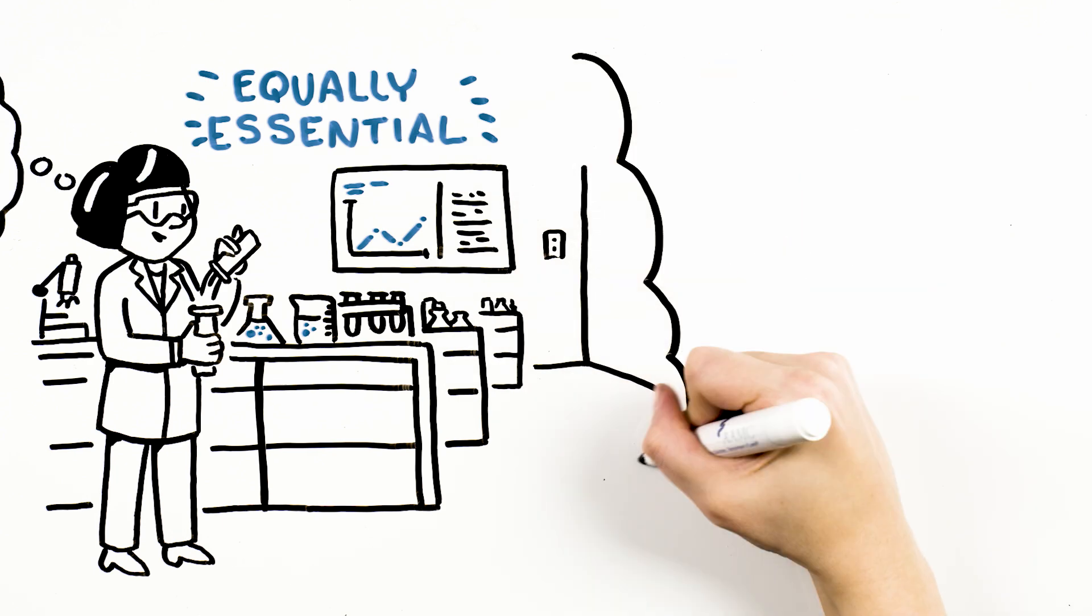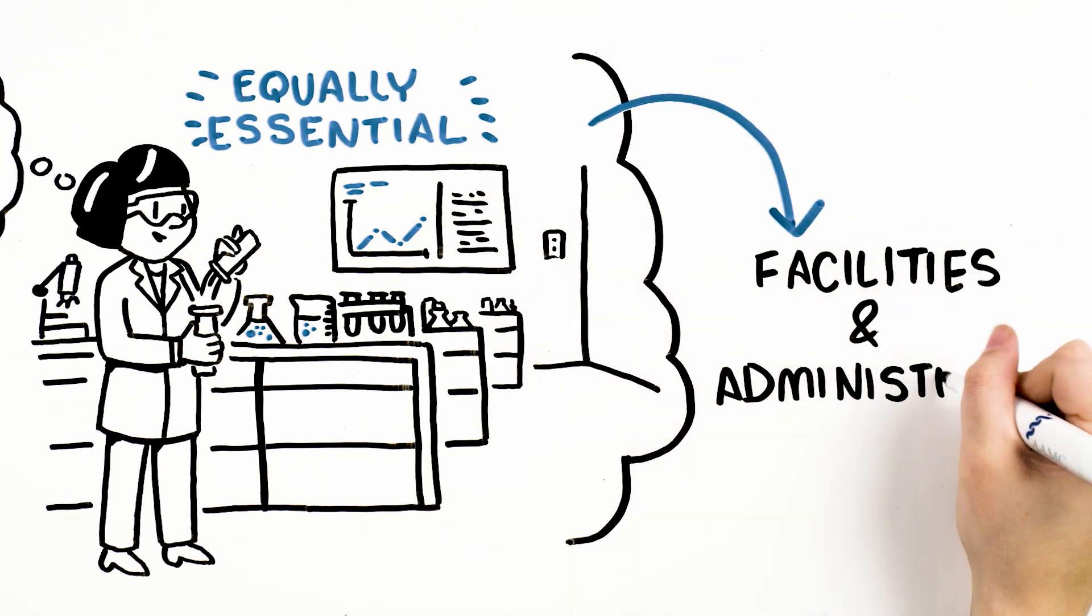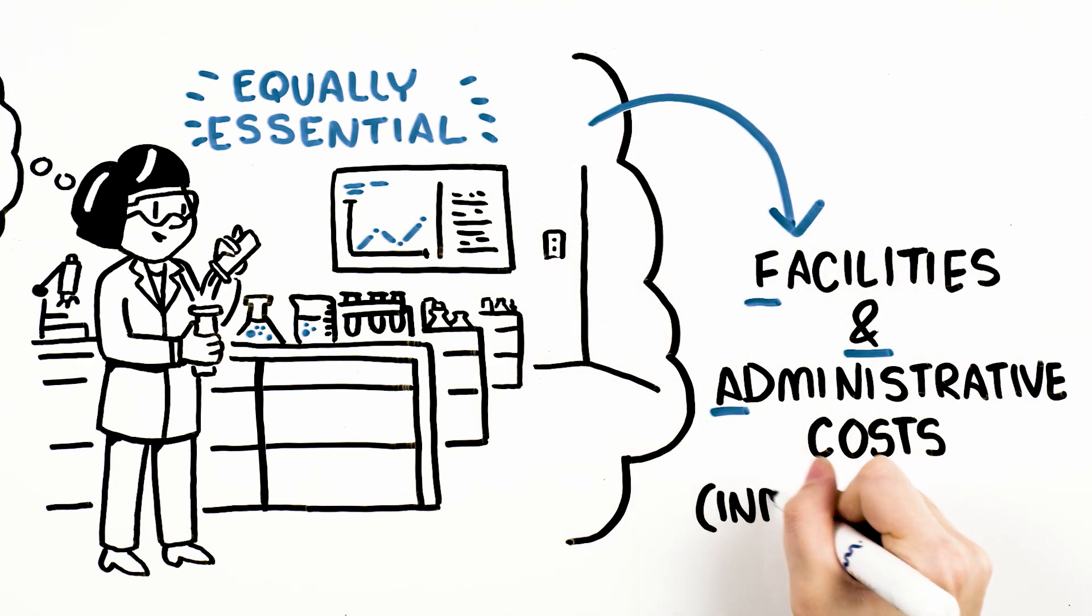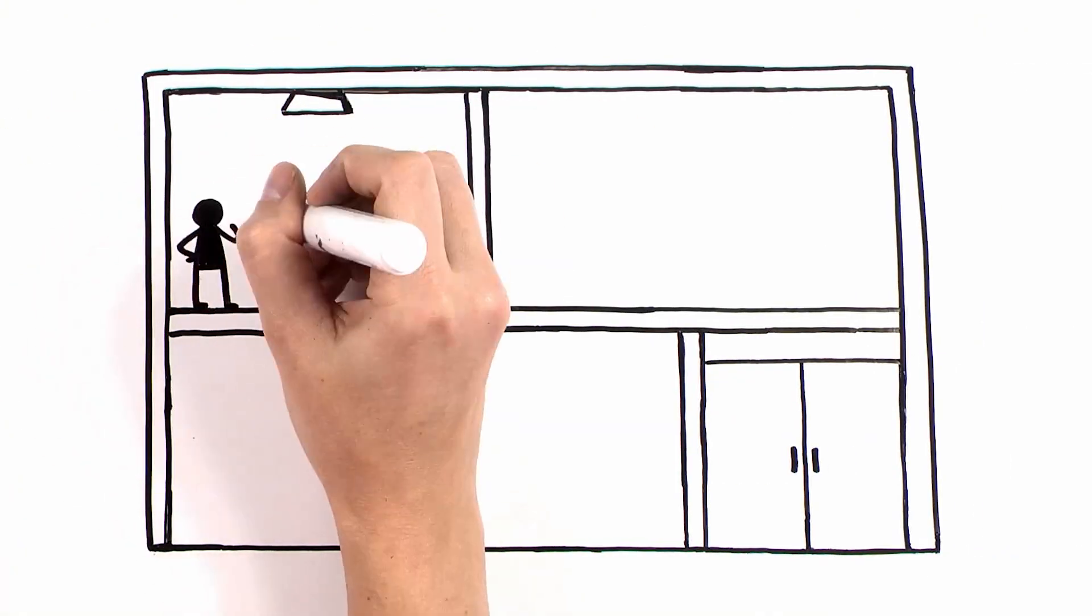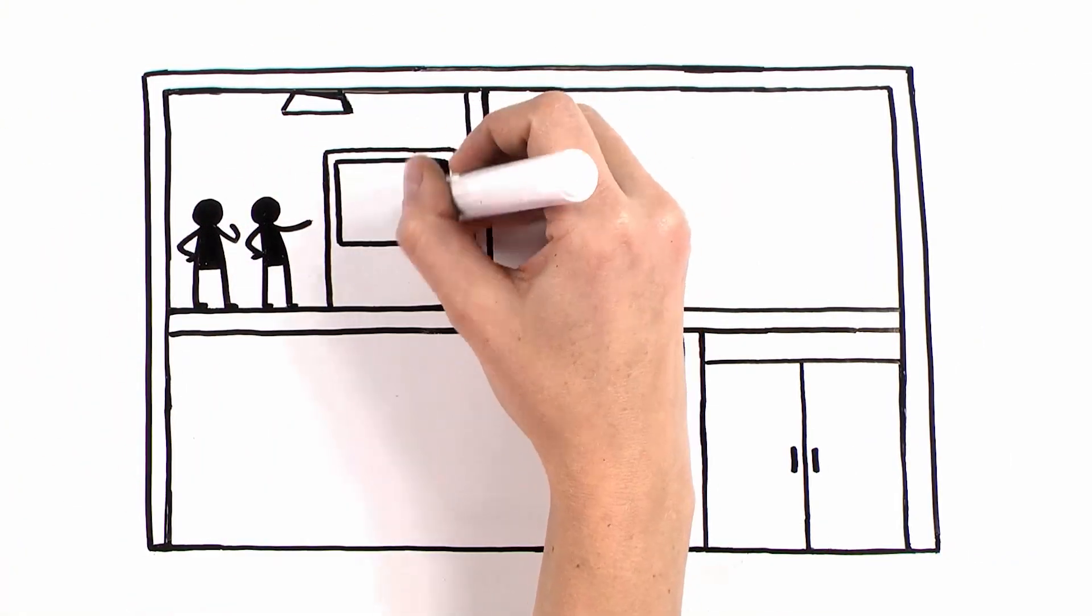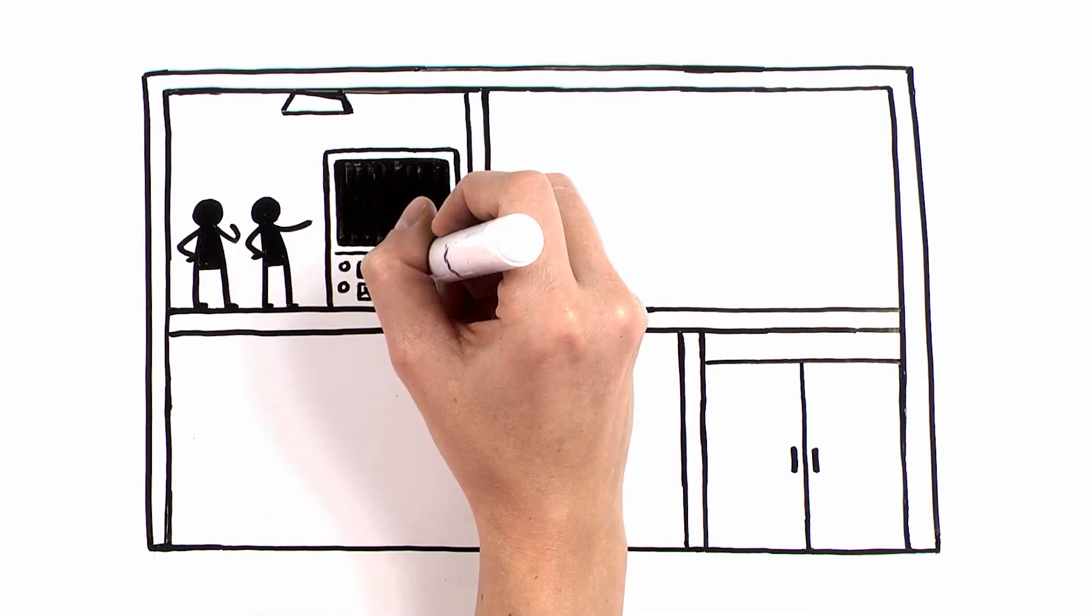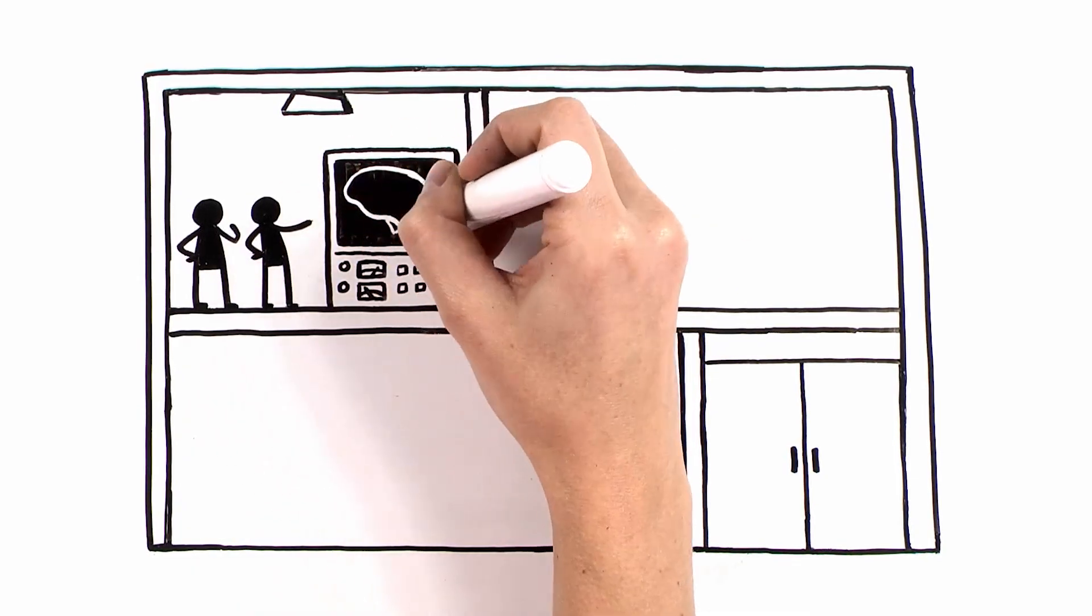These are equally essential research operating costs, also called F and A, or indirect costs. This funding helps pay for the cost of laboratories and other research-specific facilities provided by the institution and used for federally funded research.